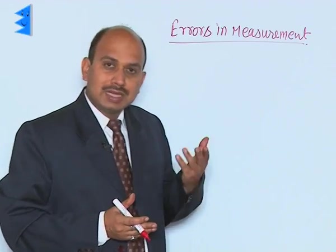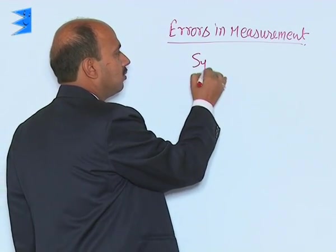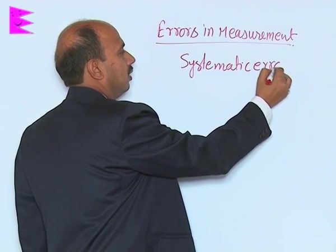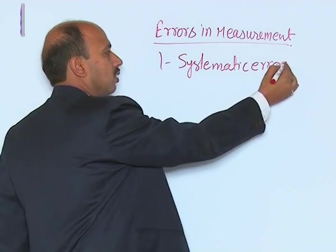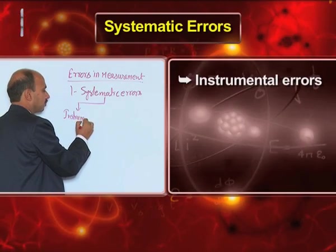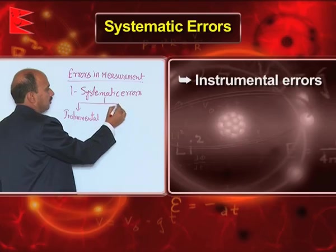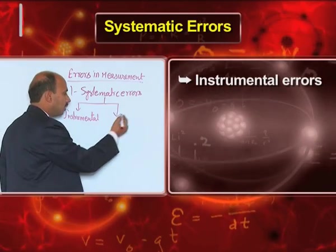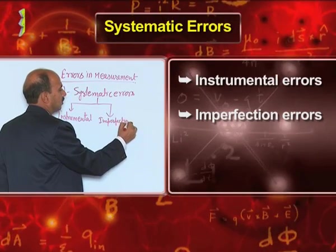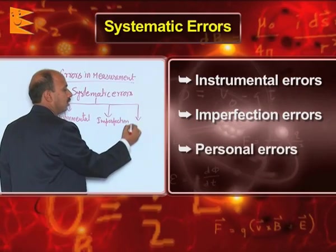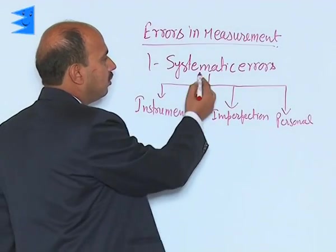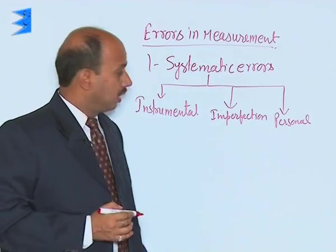There are two types of errors. The first one is systematic error. In systematic errors there are three parts: first is instrumental, second is imperfection, and the third one is personal.